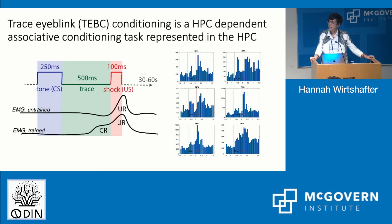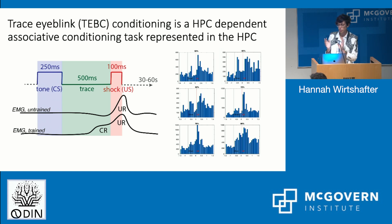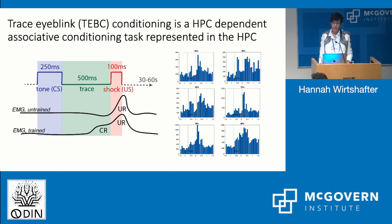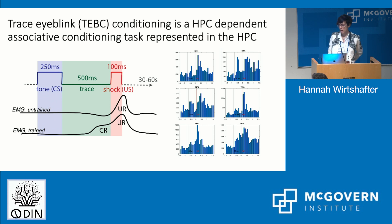I'm looking at a behavior called trace eyeblink conditioning, which is a hippocampus-dependent associative conditioning task — animals without a hippocampus can't do this. You have a conditioned stimulus, which is a tone, then a 500-millisecond trace period, and that trace period is essential — it's what makes the task hippocampally dependent. Then you have your US, which is a shock to the eyelid. At the beginning of training, animals only blink to the shock, but as they are trained, their conditioned response develops and they start blinking earlier — after the tone and before the shock. This task is also interesting because it's represented in the hippocampus. You can see population-level activity across six different sessions, with different activity when the tone and the shock are presented.